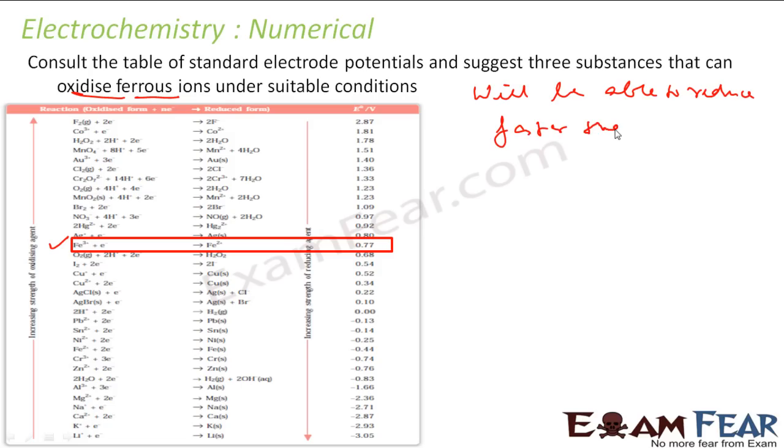Faster than Fe3+ to Fe2+, correct? See, something which can oxidize this from Fe2+ to Fe3+, that means they are the one which will be able to reduce faster than this. If they're able to reduce faster than this, then only they can actually oxidize them. Correct. So in that case, anything which has more reduction potential, because they're talking about the ability to reduce, then this will be able to do.